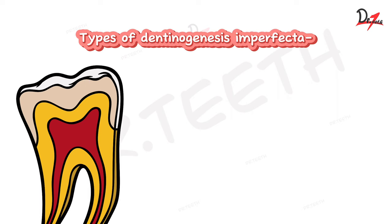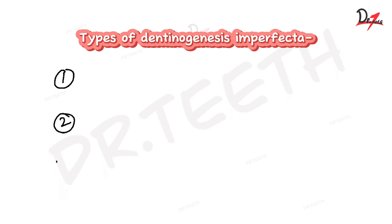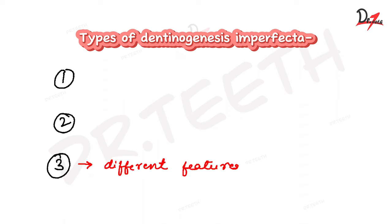We have three types of Dentinogenesis imperfecta: type one, type two, and type three. Type three is the only one where all the features are opposite compared to type one and type two.